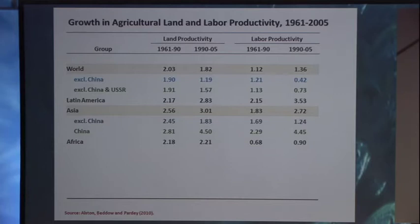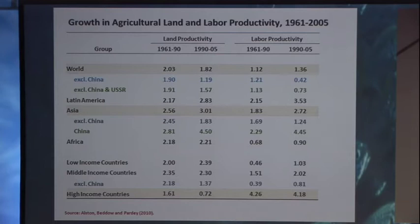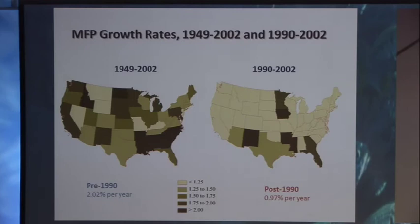Latin America is another exceptional story, particularly Brazil's driving things there. Throughout Asia, it looks like Asia's okay, but when you take China out, it doesn't look as good. Africa doesn't look so good. Another way to cut it is by income category of countries, and here you can see that it's the high-income countries in particular where there's been a problem with land productivity growth.